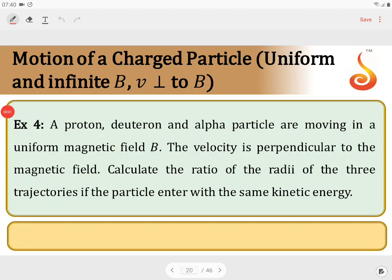A proton, deuteron and alpha particle are moving in a uniform magnetic field B. The velocity is perpendicular to the magnetic field. Calculate the ratio of the radii of the three trajectories if the particles enter with the same kinetic energy.